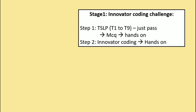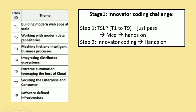Stage 1 is the Innovator Coding Challenge. As a prerequisite, you have to complete TSLP by choosing a track. TSLP consists of tracks T1 to T9 — specifically seven tracks: T1, T2, T3, T4, T5, T7, and T9. TSLP consists of MCQs and hands-on. For example, if you choose the T5 track which is related to Cloud, you will get around 30 MCQ questions related to Cloud.